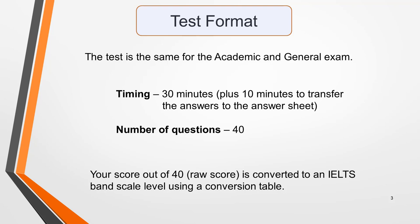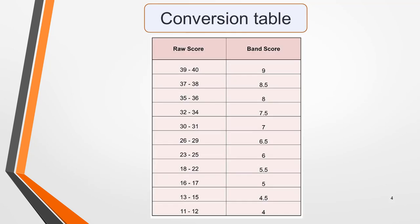Each correct answer is awarded one mark. Your score out of 40 is called your raw score and this is converted to an IELTS band scale level using a conversion table. Here's the table. Pause the video if you want to study it for a moment.